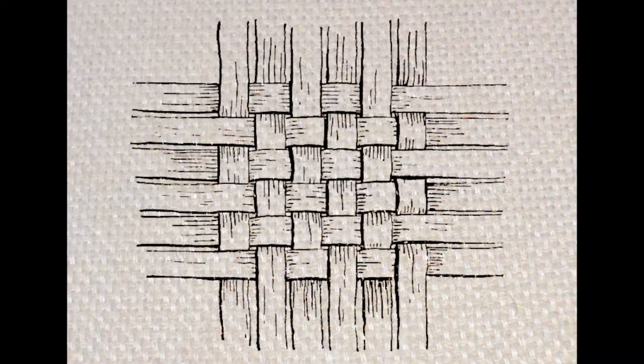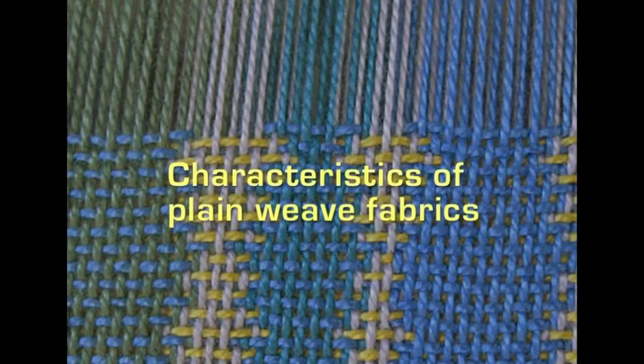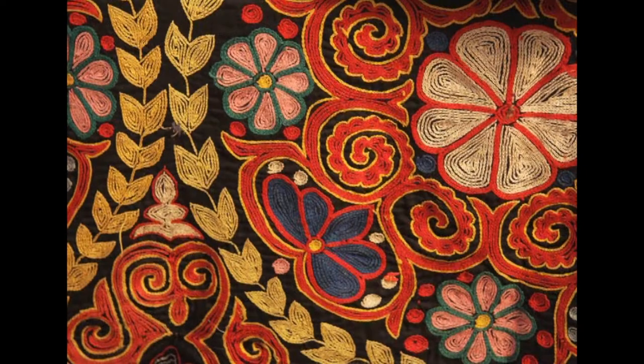Plain weave is inexpensive because only two harnesses are used, so it is mainly used for cotton fabrics to produce inexpensive cottons. It has no right and wrong sides, and also no up and down, because even if you turn it to the wrong side or the right side it looks the same. There is no design on the surface, making it visually uninteresting, but this plain surface becomes suitable for printing, surface ornamentation, or finishing to add designs to the material.